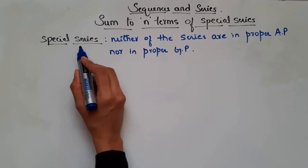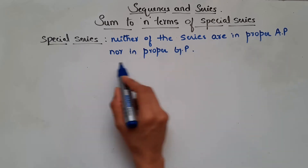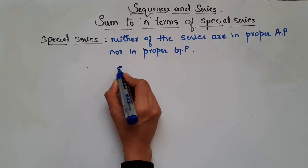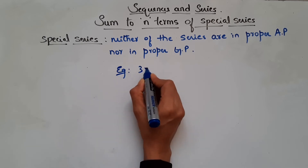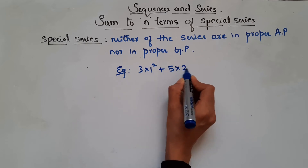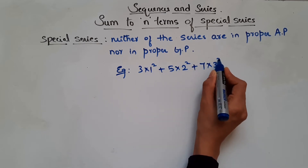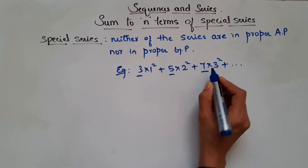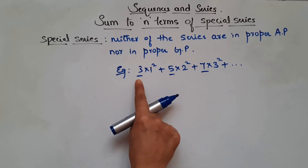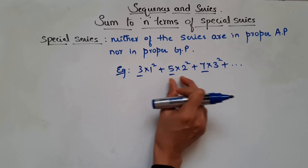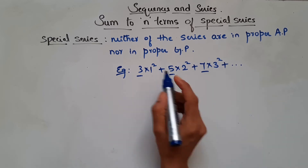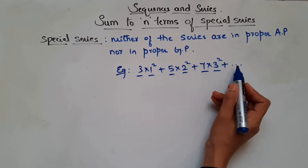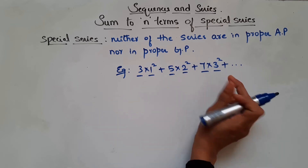Special series means neither of the series are in proper AP nor in proper GP — such series are called special series. For example, consider the series 3·1² + 5·2² + 7·3² and so on. Here the first part of each term — 3, 5, 7 — has a common difference of 2, so they are in AP. But the second part, 1², 2², 3²..., is neither in AP nor in GP.